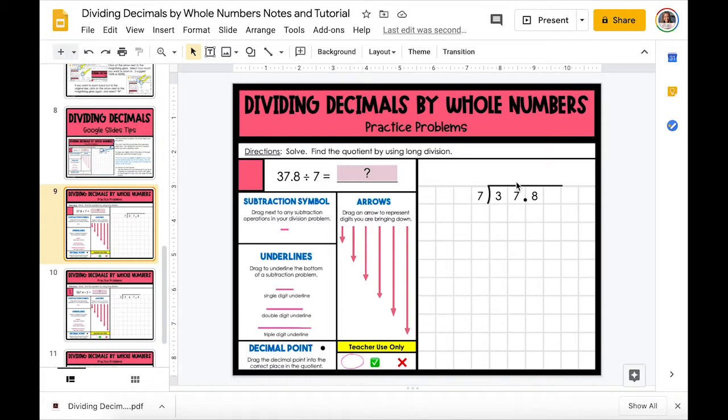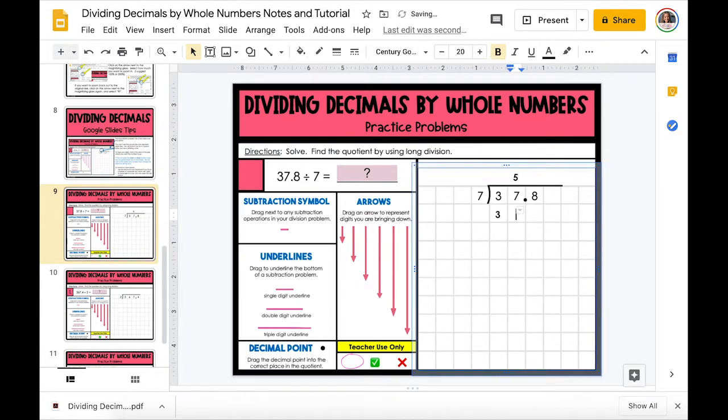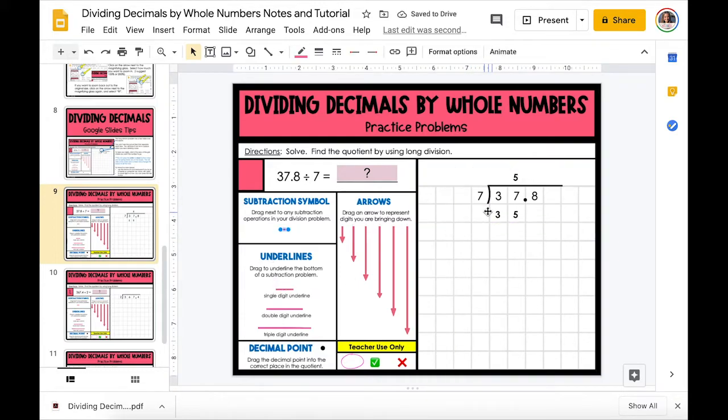To divide a decimal by a whole number, we're going to divide just like we would with whole numbers to begin with. Three cannot be divided by seven, so we're going to start with 37 divided by seven and it can go in five times,